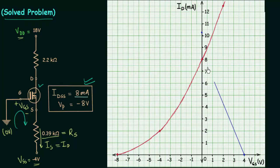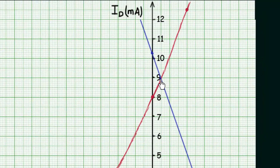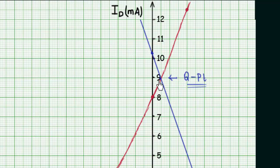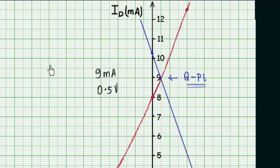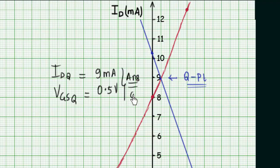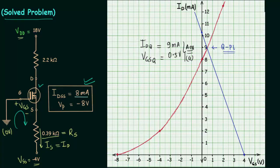Joining the two points gives the load line of the network. The point of intersection of the load line and the transfer curve is the operating point. The y-coordinate of the operating point is 9 milliamps and the x-coordinate is 0.5 volts. Therefore IDQ equals 9mA and VGSQ equals 0.5V. This is the answer for part A.